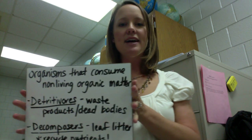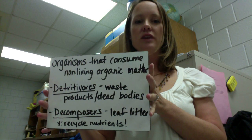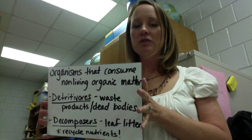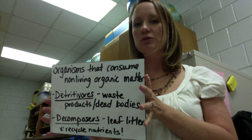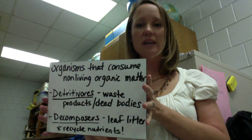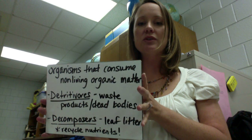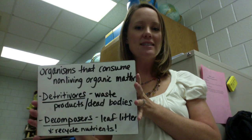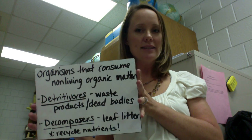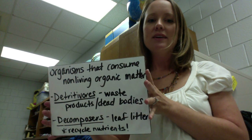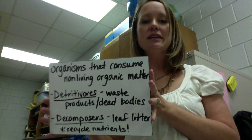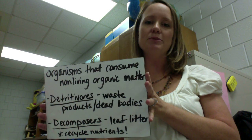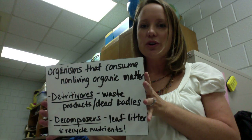The organisms that consume nonliving organic matter are the detritivores and decomposers. They can fall at any trophic level because they can consume producers, primary consumers, secondary consumers, and on up. Detritivores are those that eat waste products and dead bodies — millipedes are an example. Decomposers generally eat leaf litter and are the ones that recycle nutrients and enrich the topsoil — things like earthworms and bacteria.